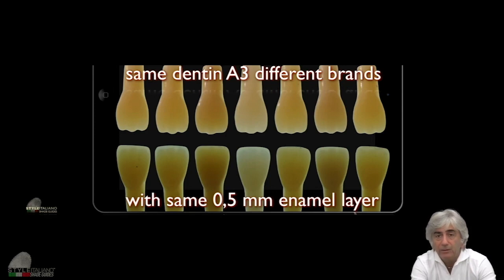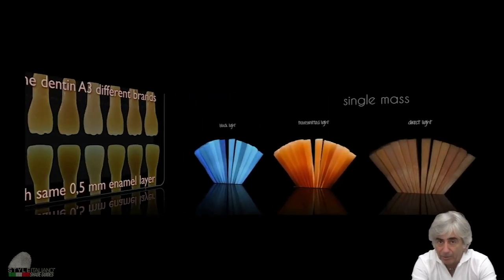Even you are using, you have used only A3 dentine and A2, A1 or A3 enamel. So if you change the material, you change the result. The recipe for a material is not the same as a recipe for another one. That's the problem.